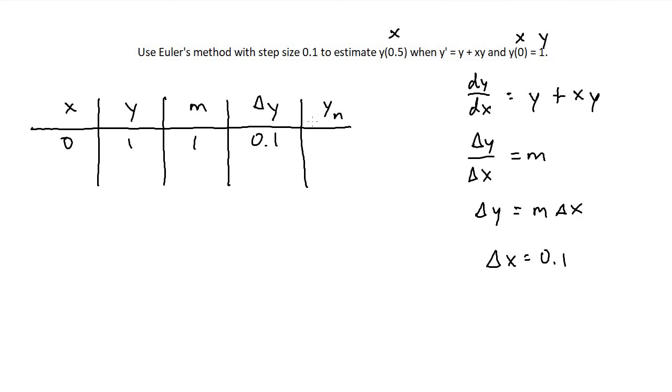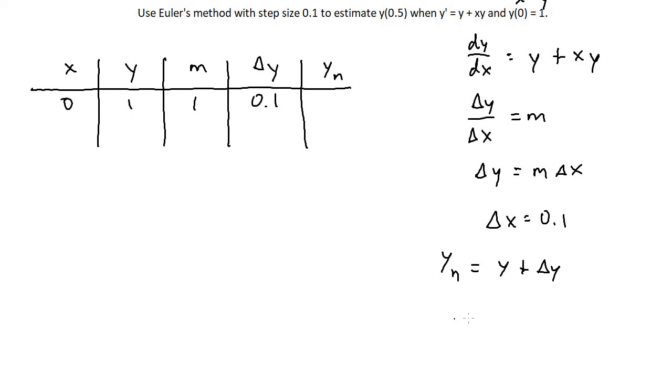Your new y value or your y new is pretty simple. Y new is just going to be equal to your initial y plus delta y. So in order to find y new in this row, we're just going to take 1 and add 0.1. So we have 1 plus 0.1 and then we'll get 1.1. That is our new y value.